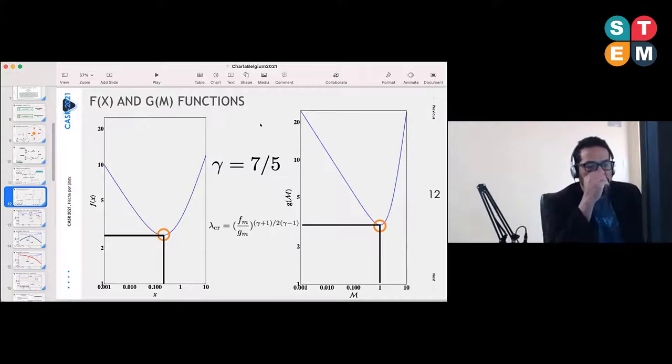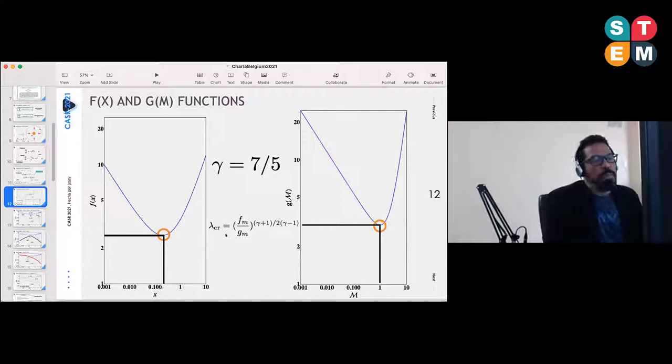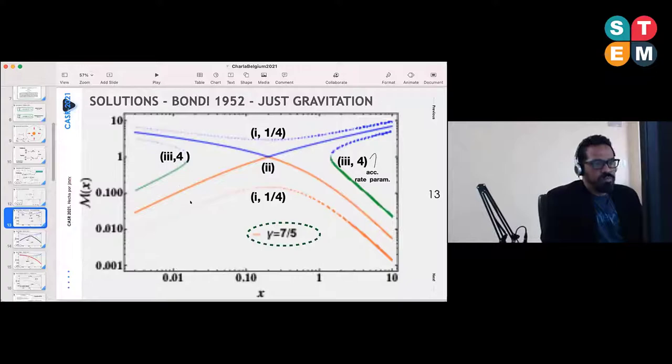I reproduced the Bondi version of 1952 just to show you these two special functions f and g—f as a function of the position or the distance from the center of the gas and the Mach number. With these two minima you are able to actually define a critical accretion rate parameter which is defined in this way here.